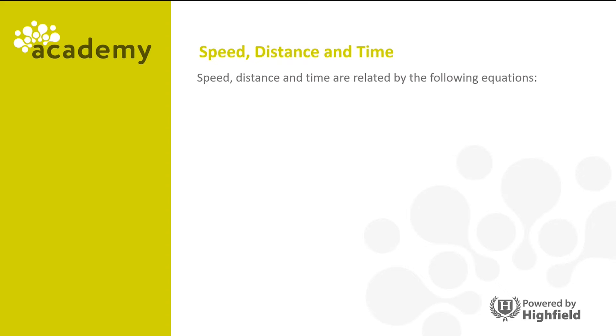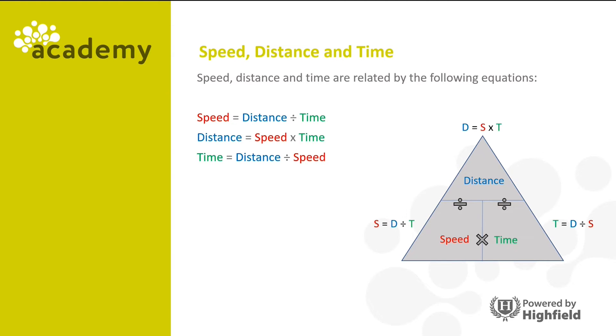Speed, distance and time are related by the following equations. Speed equals distance divided by time, distance equals speed times time, and time equals distance divided by speed. And if you look in this diagram, you can see very clearly how they all relate to each other.